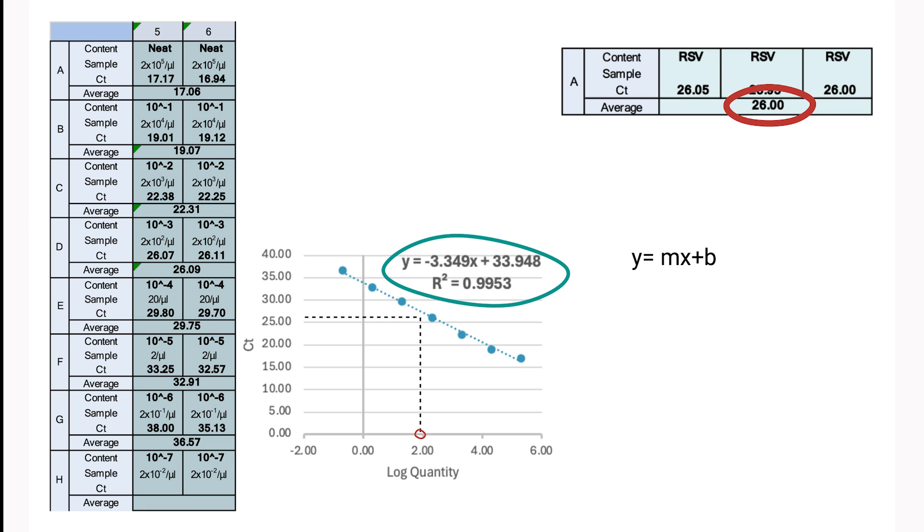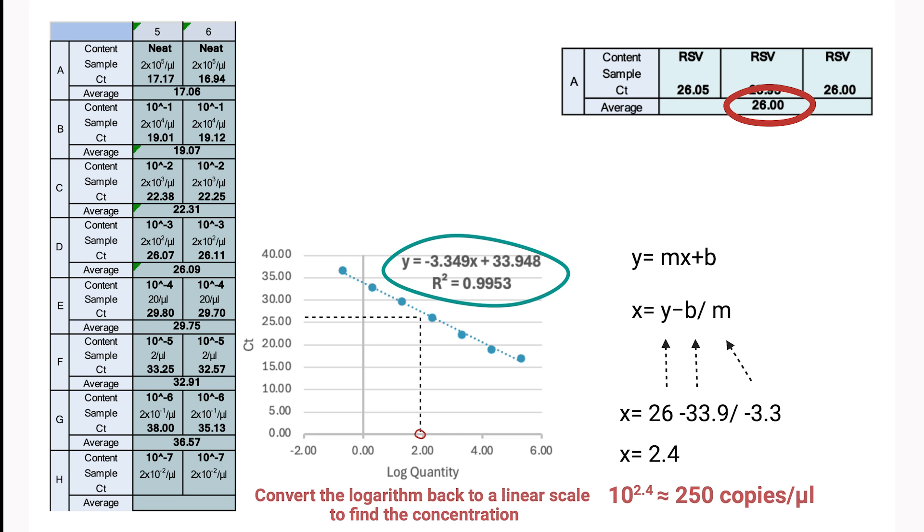But to do this accurately, we can rearrange our equation with the slope and y-intercept values to find x. With a y-value of 26, a b-value of 33.9, and a slope of minus 3.3, we find that our unknown sample contains a log quantity of 2.4 copies. When we convert this logarithm back to a linear scale, it equates to 250 copies per microliter for our unknown sample.